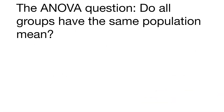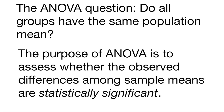The ANOVA question, then, is: do all of the different groups have the same population mean? You can imagine running an experiment with lots of different means for different groups — do all of them have the same population mean? That's what an analysis of variance allows us to do. The ANOVA compares the variation due to specific sources with the variation among individuals that should be similar. The purpose of the ANOVA is to assess whether the observed differences among sample means are statistically different.